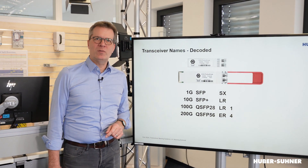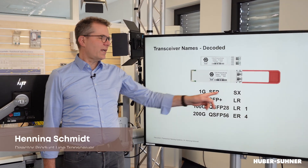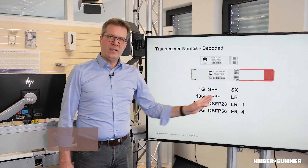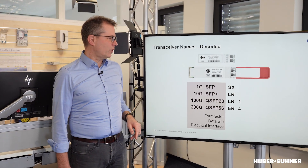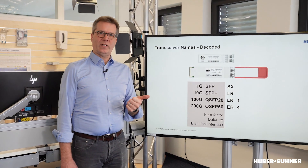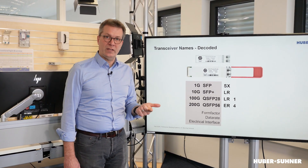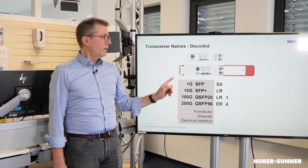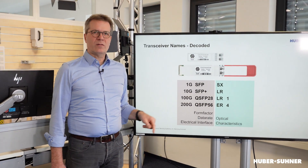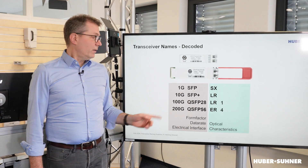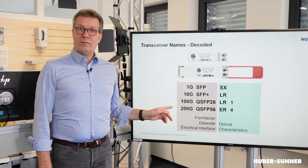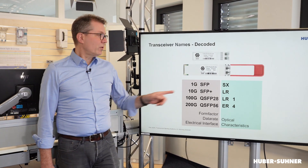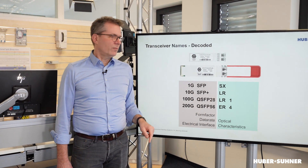Here are a few common names of transceivers, such as 1GB SFP-SX or 100GB QSFP28 LR1. These names consist of certain parts. The first part describes the physical form factor, the number of electrical lanes, and thereby the electrical part of the transceiver system. The second part of the name describes some optical characteristics. Details about this first part I have explained in a previous video, which you can find on our channel. Today, I am going to focus on those letters particularly.